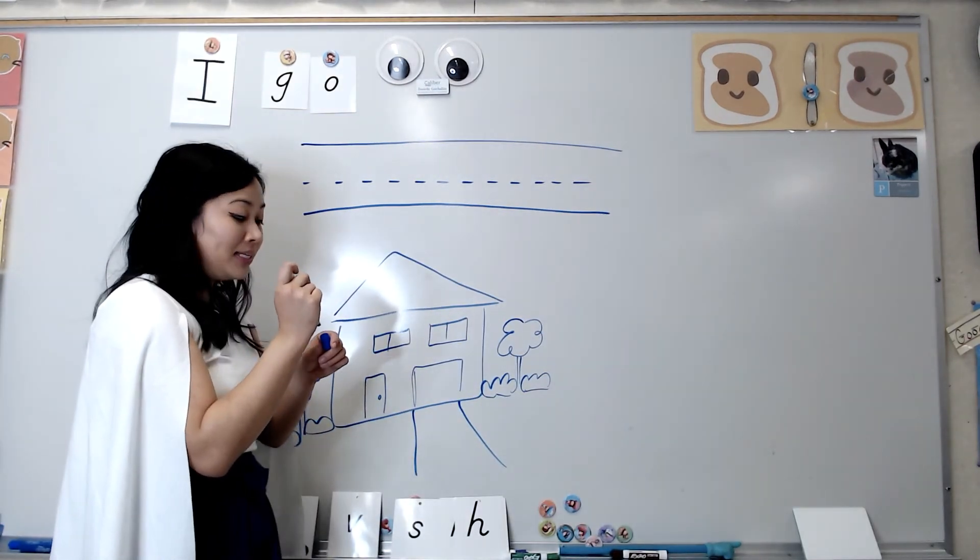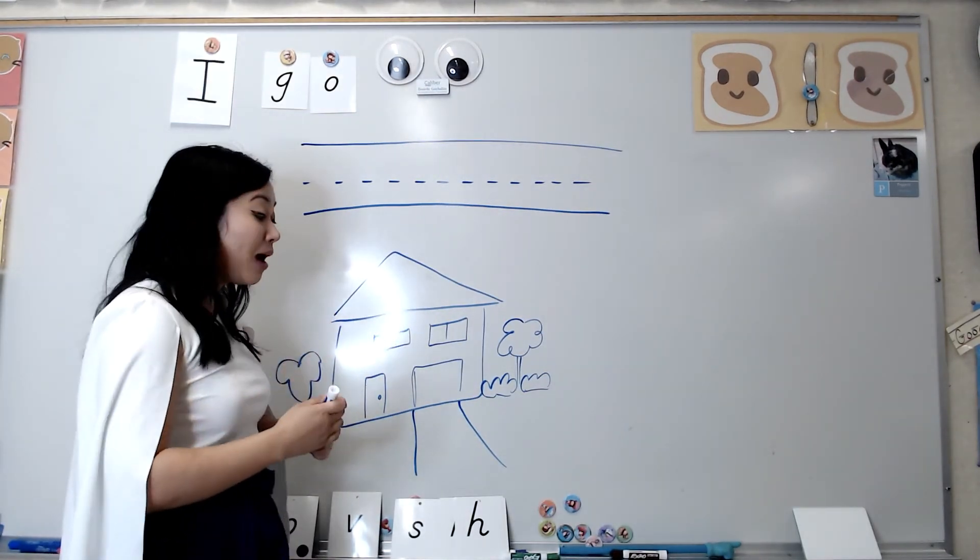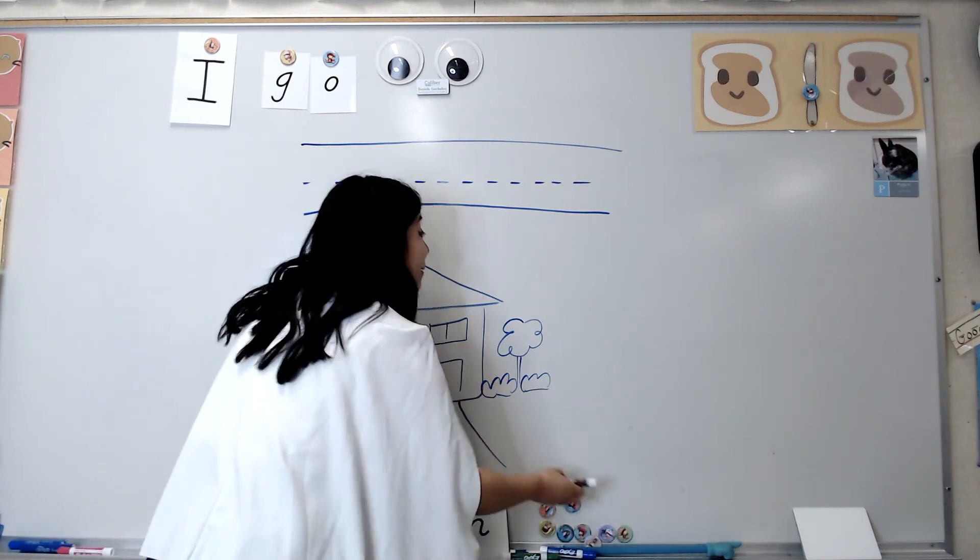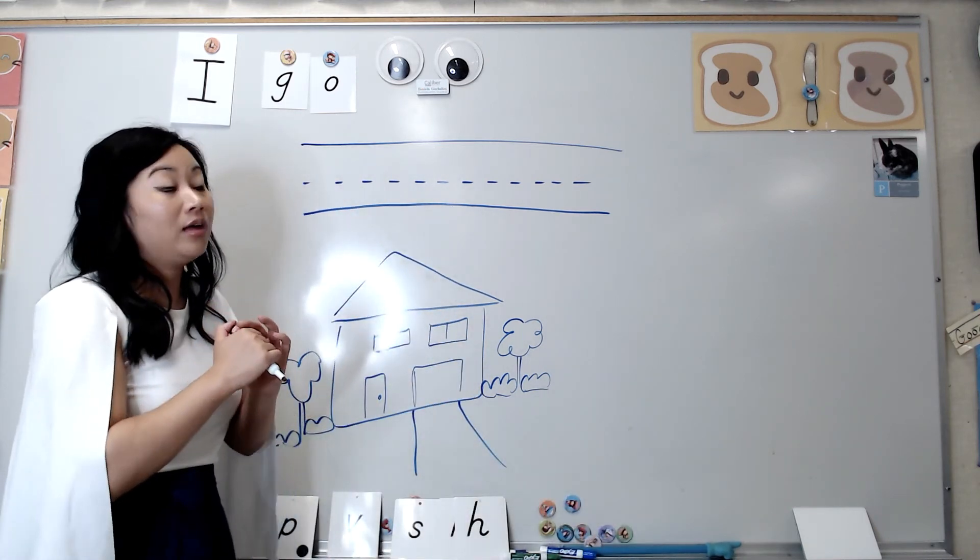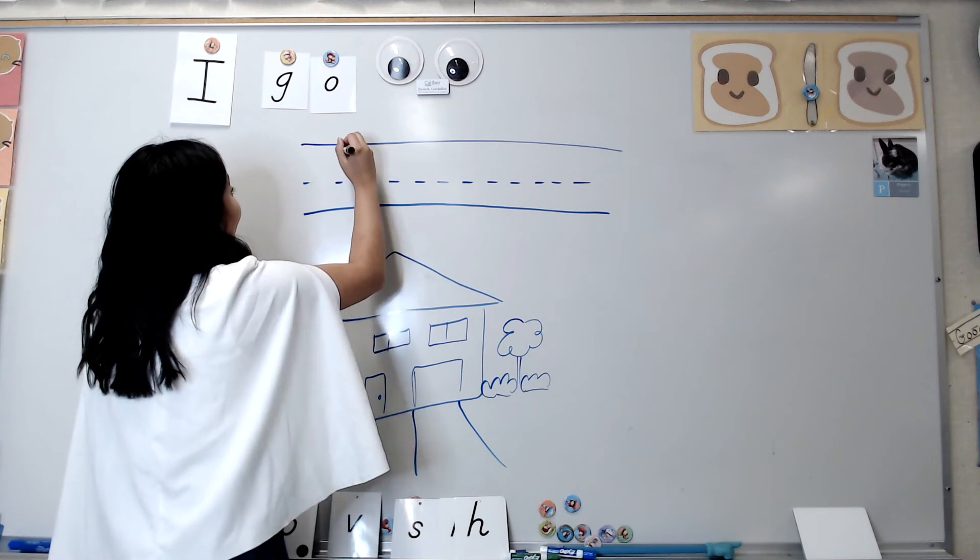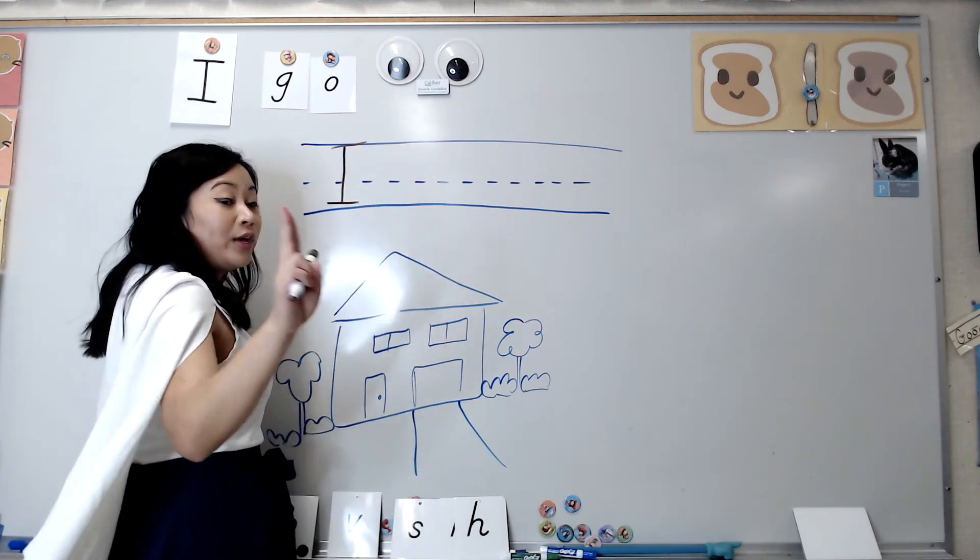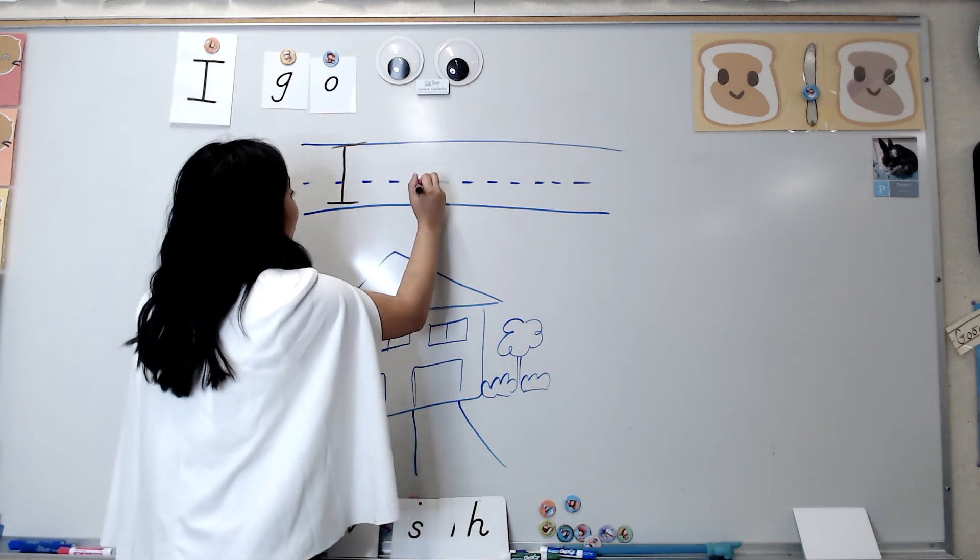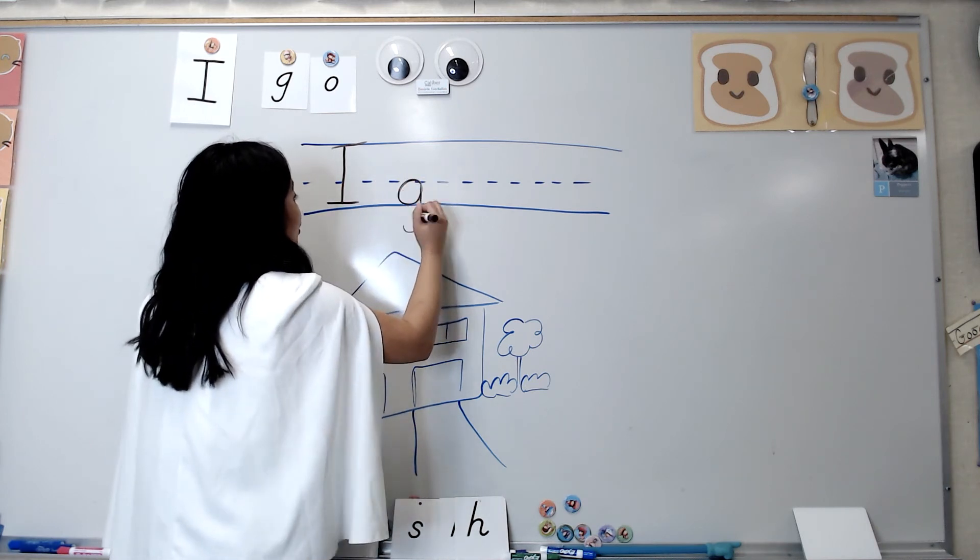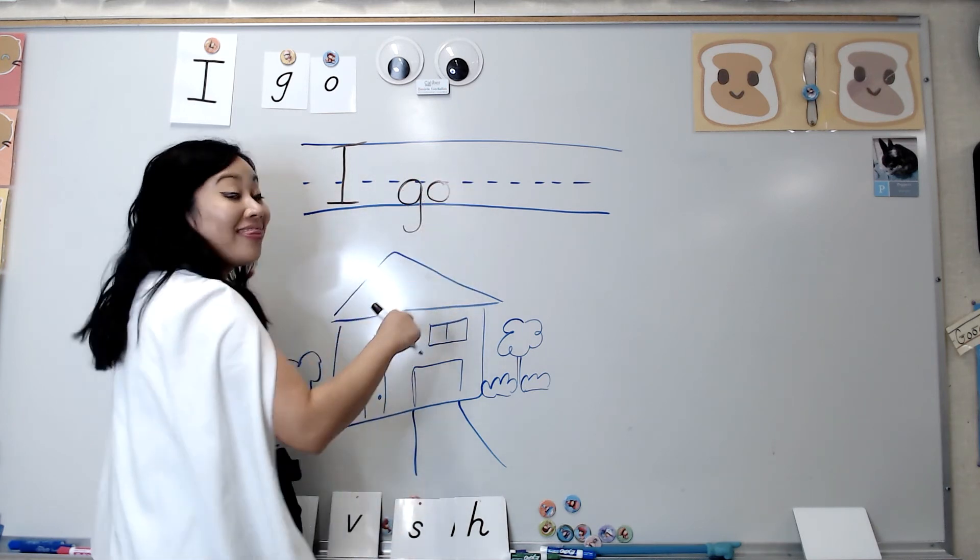And then you're going to write the words I go on the lines. Let's practice. Now, you're going to see some lines. Usually the picture is at the top, but I wanted to write the lines above so you guys could see what I'm writing. So I'm going to write I, two finger space, go, G, O.